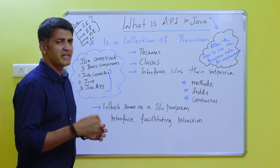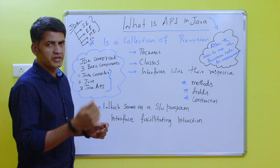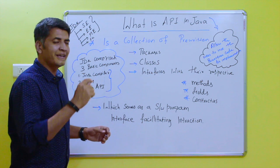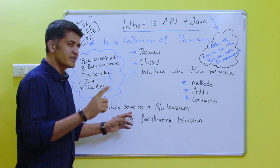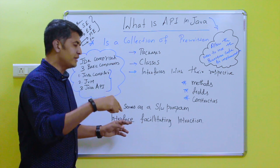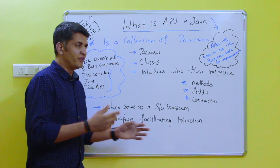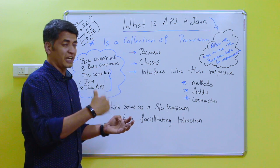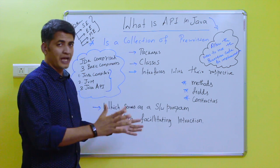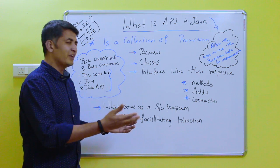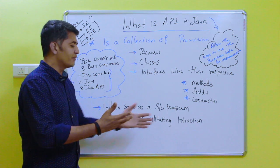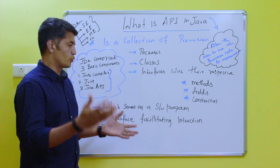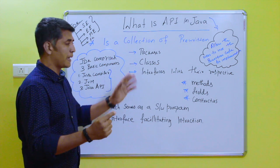You may be asking why this API is required. API is a software program that provides the facility of interaction between software programs, or provides the facility of interaction between a software program and the user. So this is the need for API.